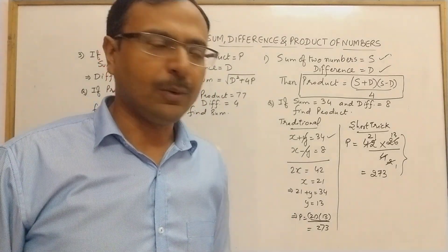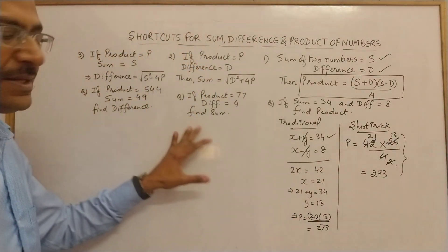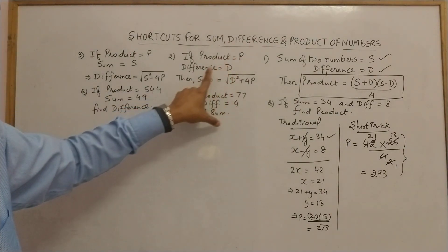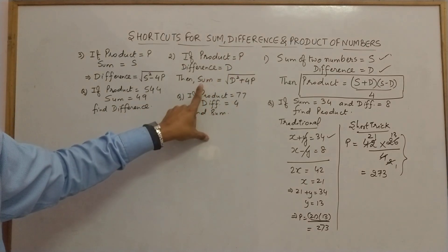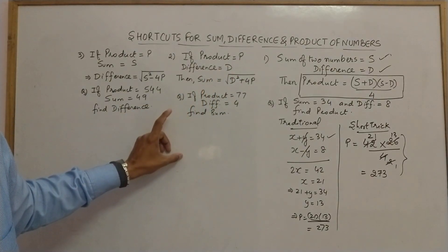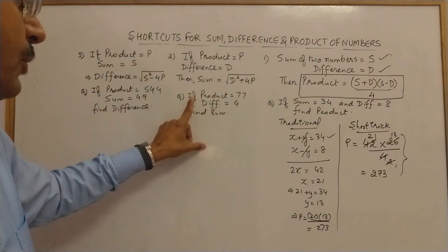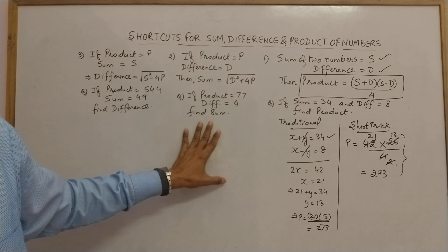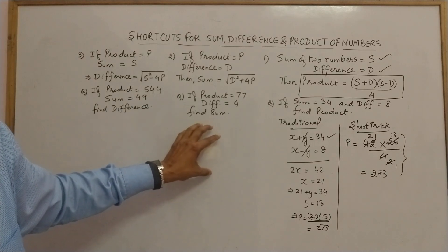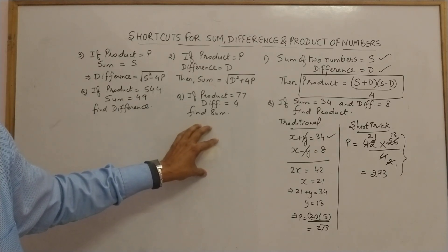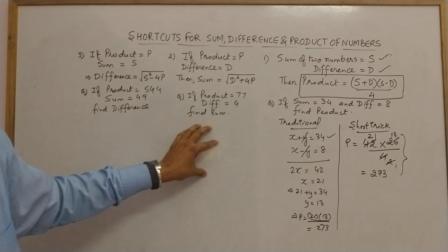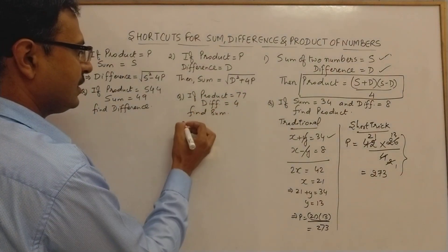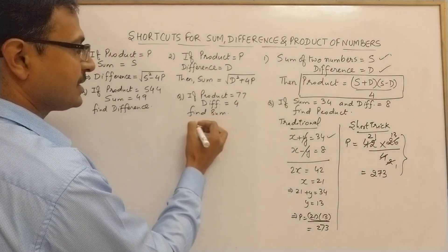Let's reciprocate the problem. In the second case we are given the product as p and difference as d, and we need to find the sum. If the product is 77 and difference is 4, find the sum. We're talking of natural numbers.